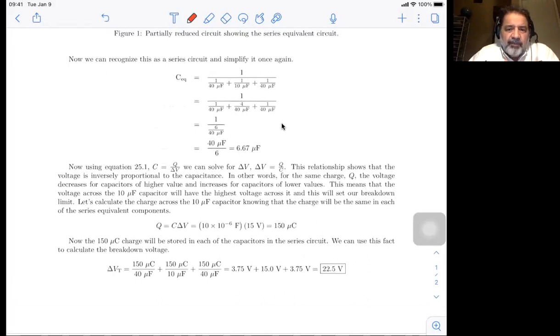Again, we're going back to V equals Q divided by C. So the V total is the sum of these 150 microcoulombs divided by 40 microfarads, 150 microcoulombs divided by 10 microfarads added to 150 microcoulombs divided by 40 microfarads. And you'll see that we get 3.75 volts, 15 volts and 3.75 volts for a total breakdown voltage of 22.5 volts.